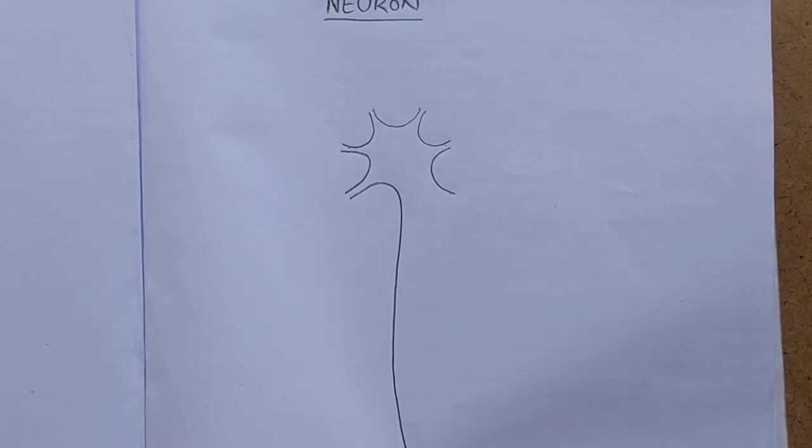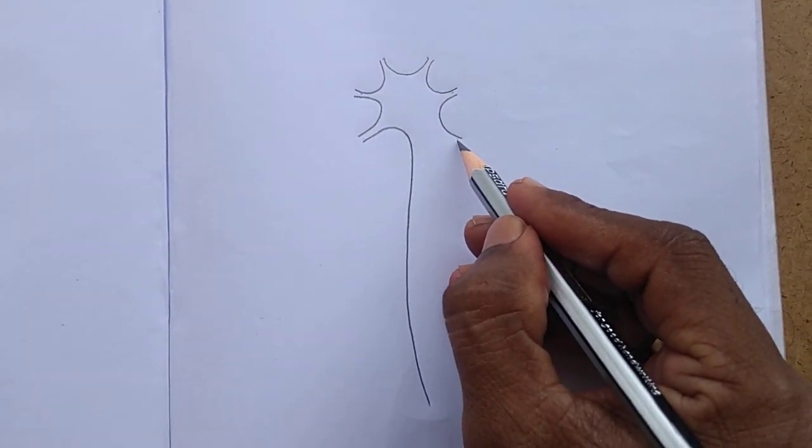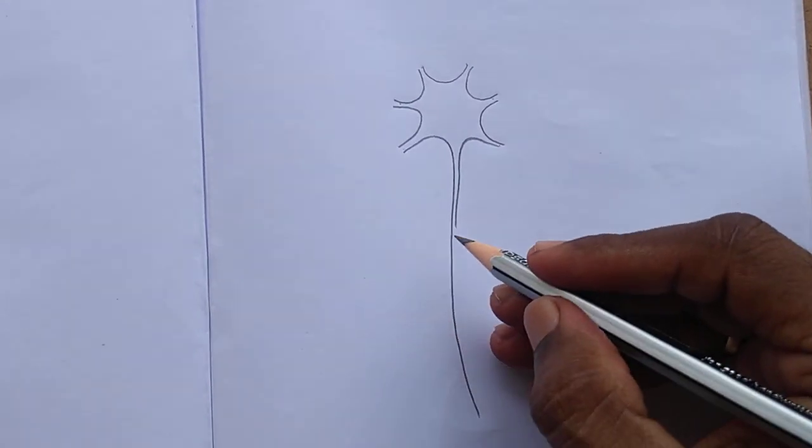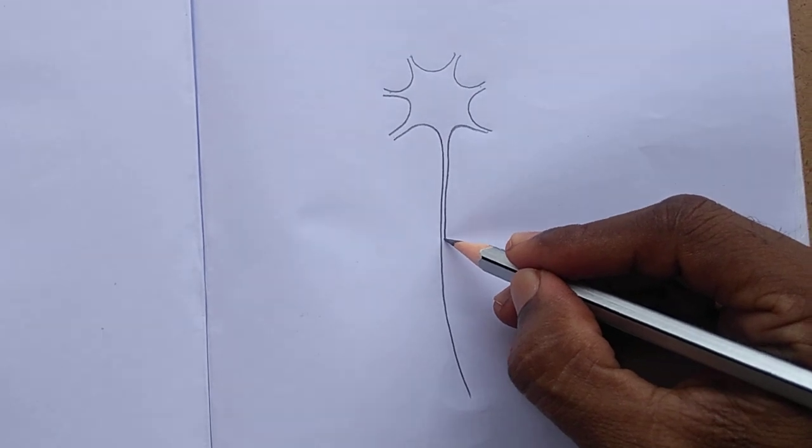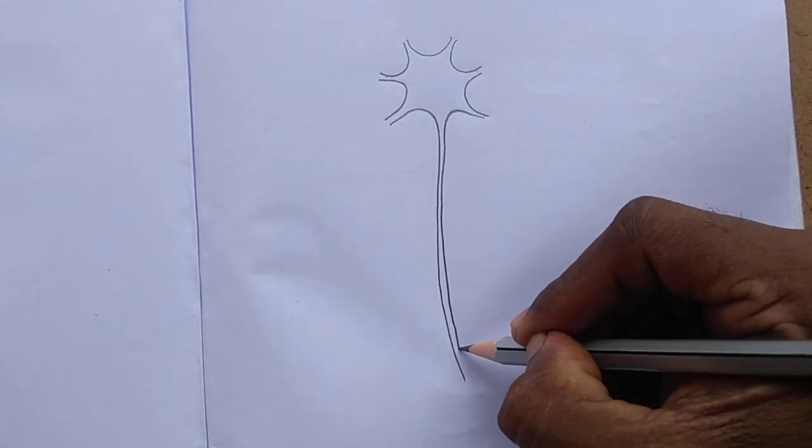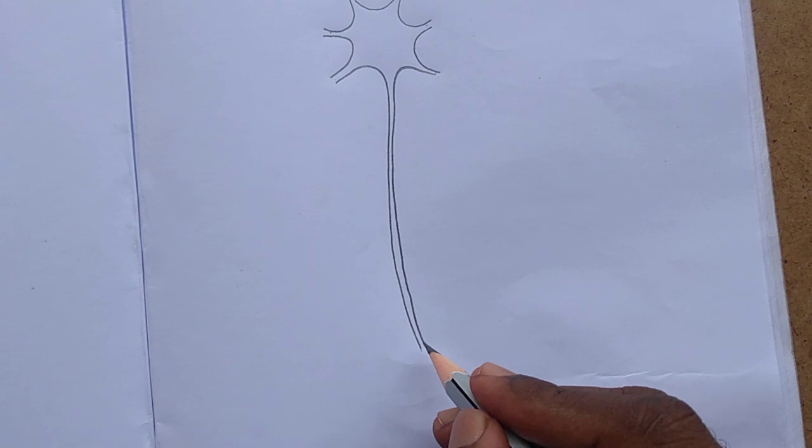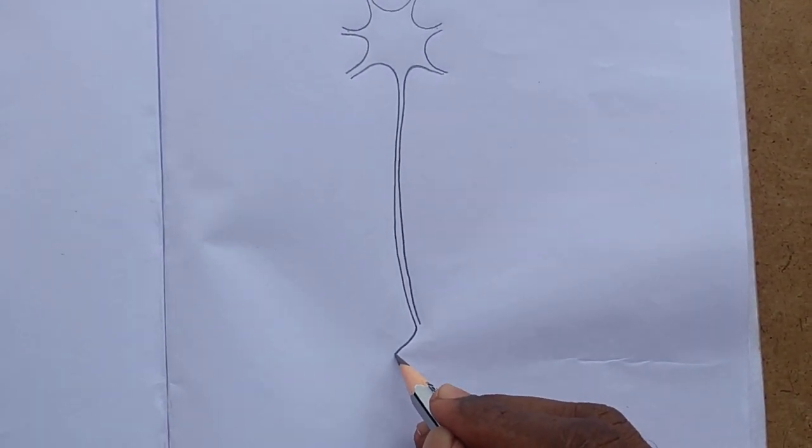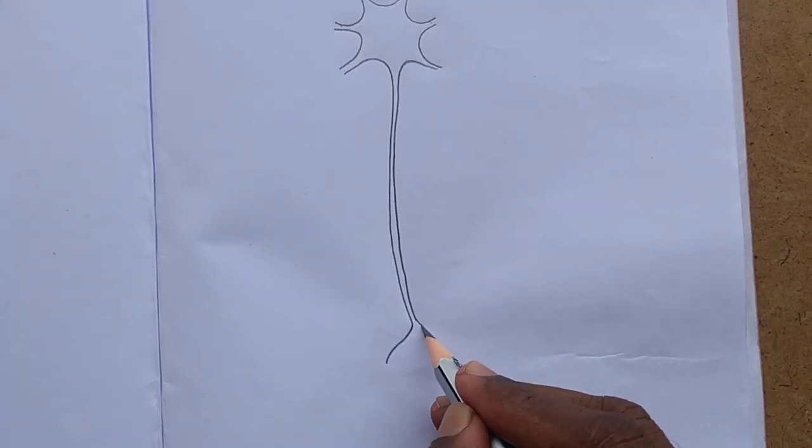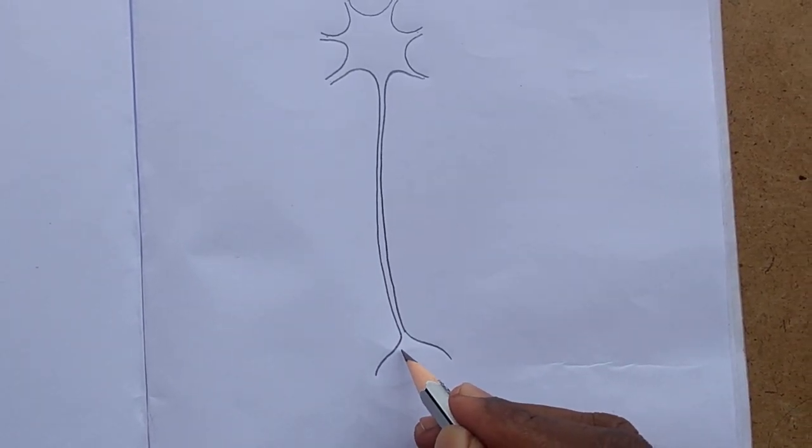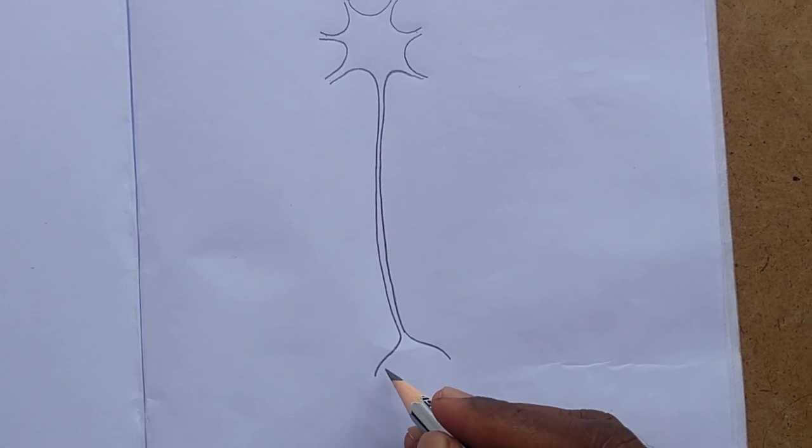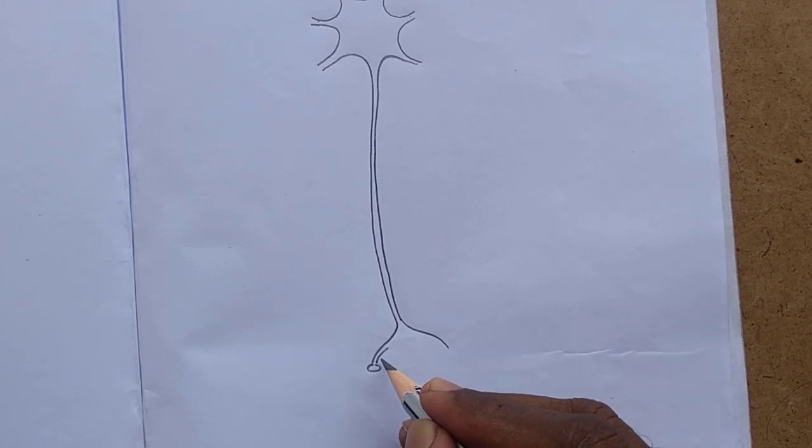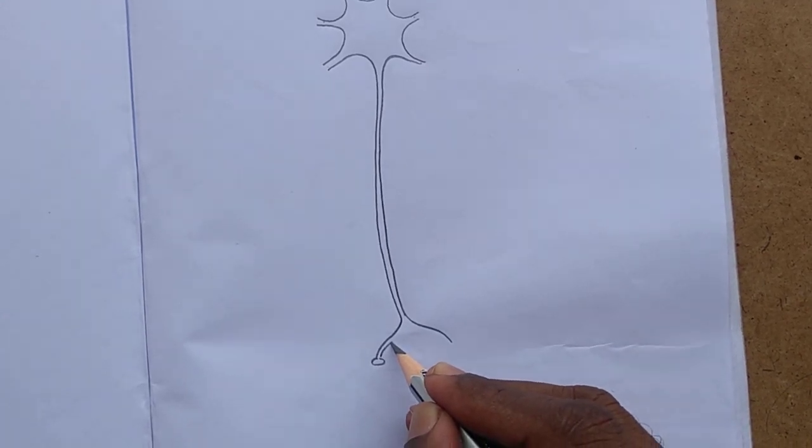Let's try it. Line for axon like this, and from this axon narrow terminals, axon terminals and synaptic knobs.